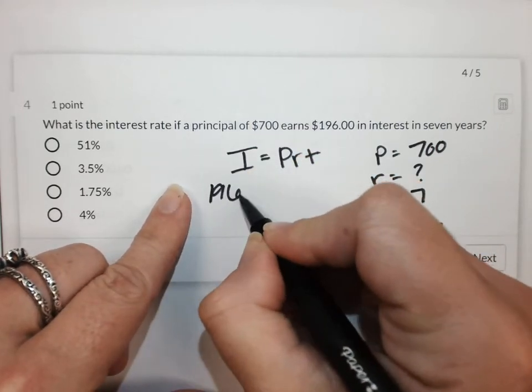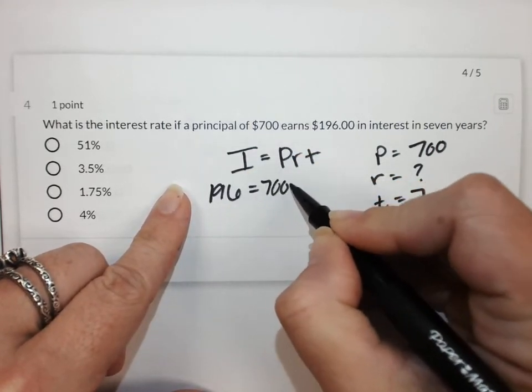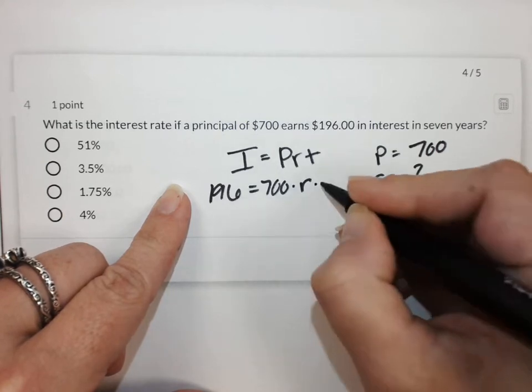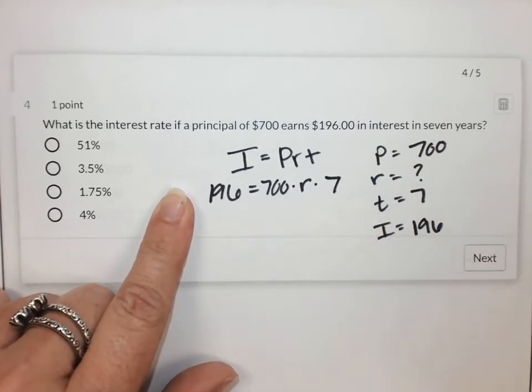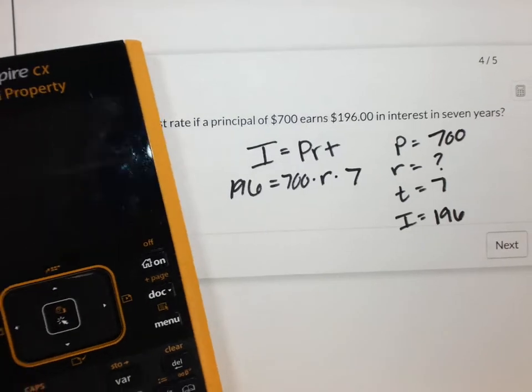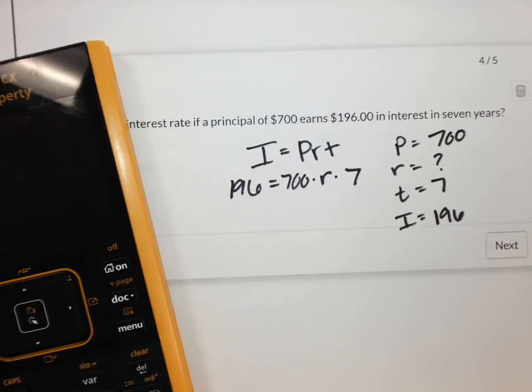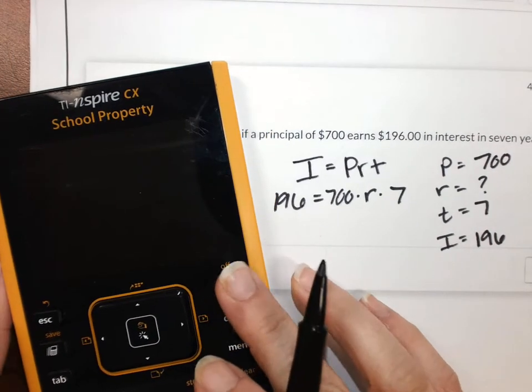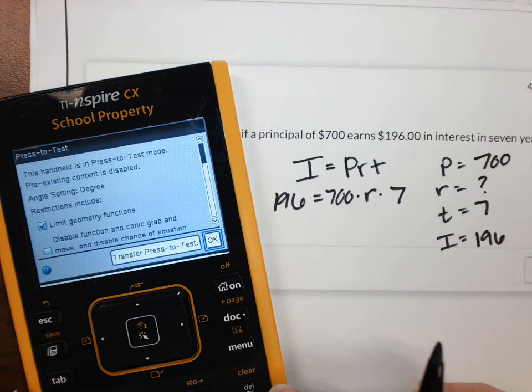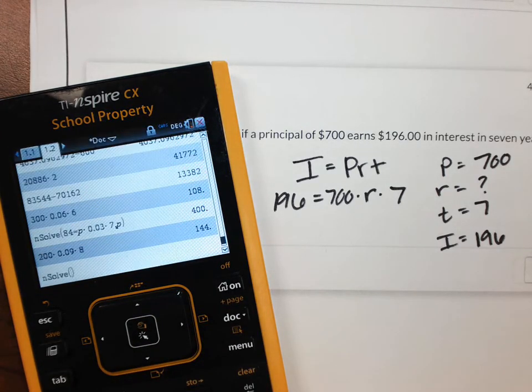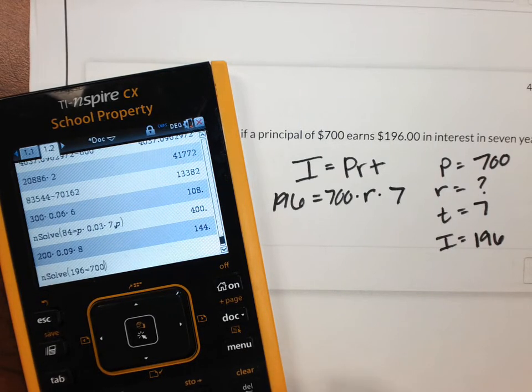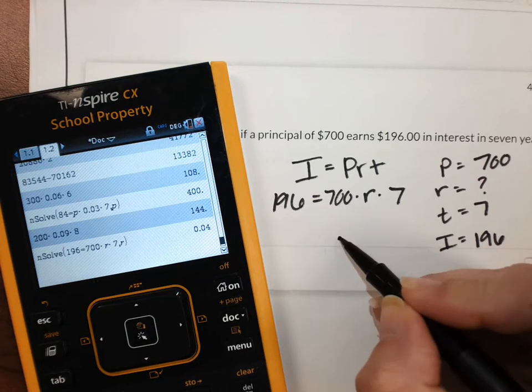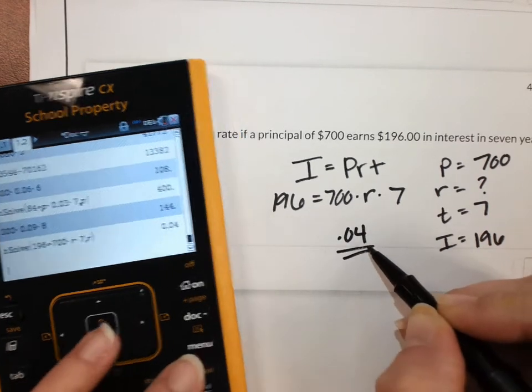So 196 equals 700 times the rate times seven. And we're going to solve for that. Alright. So let's go ahead and do that. Menu three, one. And we'll plug in 196 equals 700 times the rate times seven.